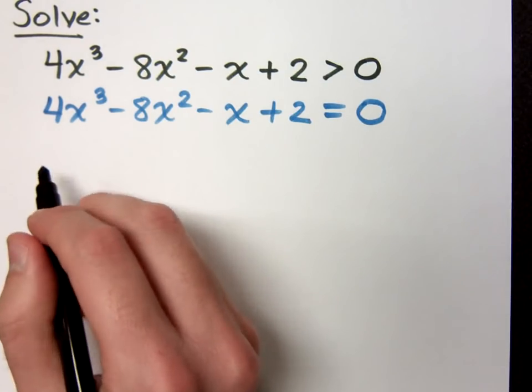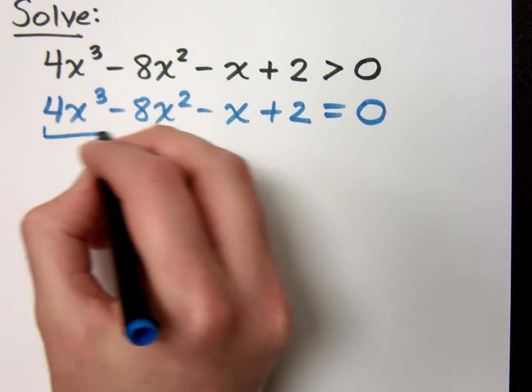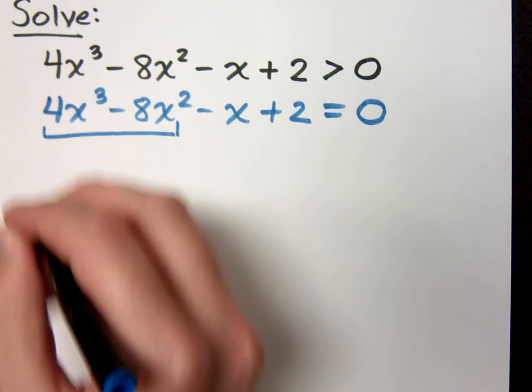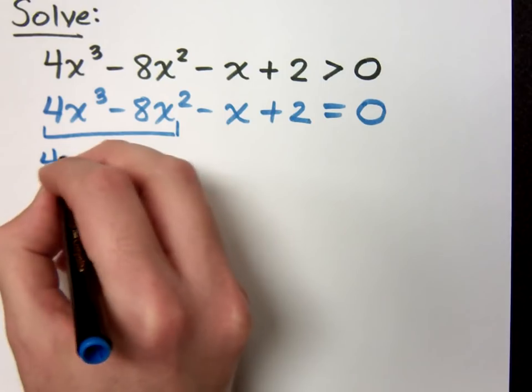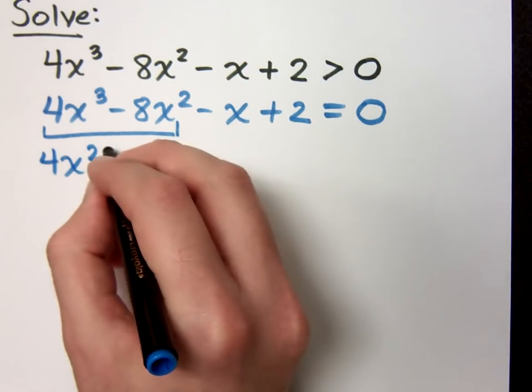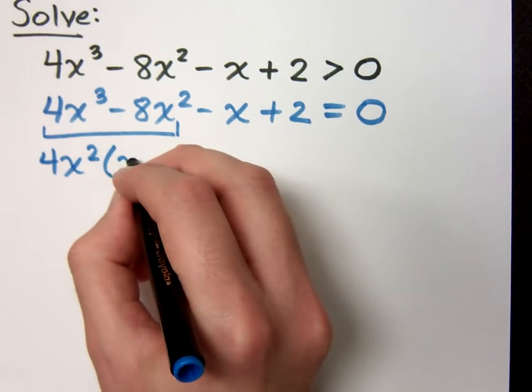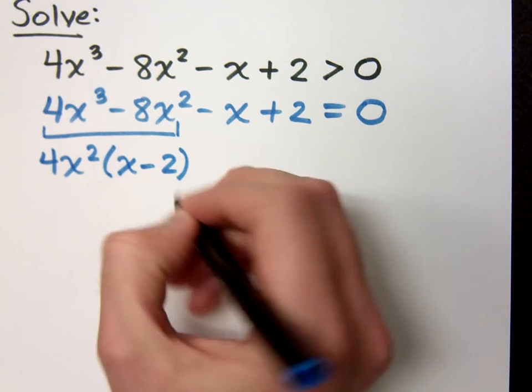So let's see, how am I going to factor this guy? Well, factoring by grouping is always good when you've got four terms. In this first group, 4x squared is a common factor. When you factor that out, you have x minus 2.